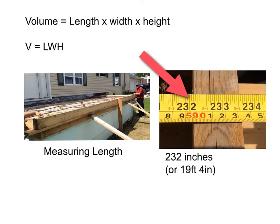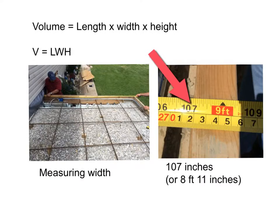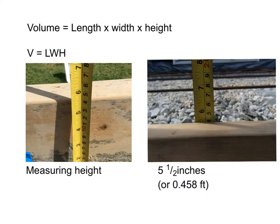To calculate volume we need to take length times width times height. The length of this porch is 232 inches or 19 feet 4 inches long. The width of this porch is 107 inches or 8 feet 11 inches wide. And the height or the depth of this porch is 5.5 inches or 0.458 feet deep.